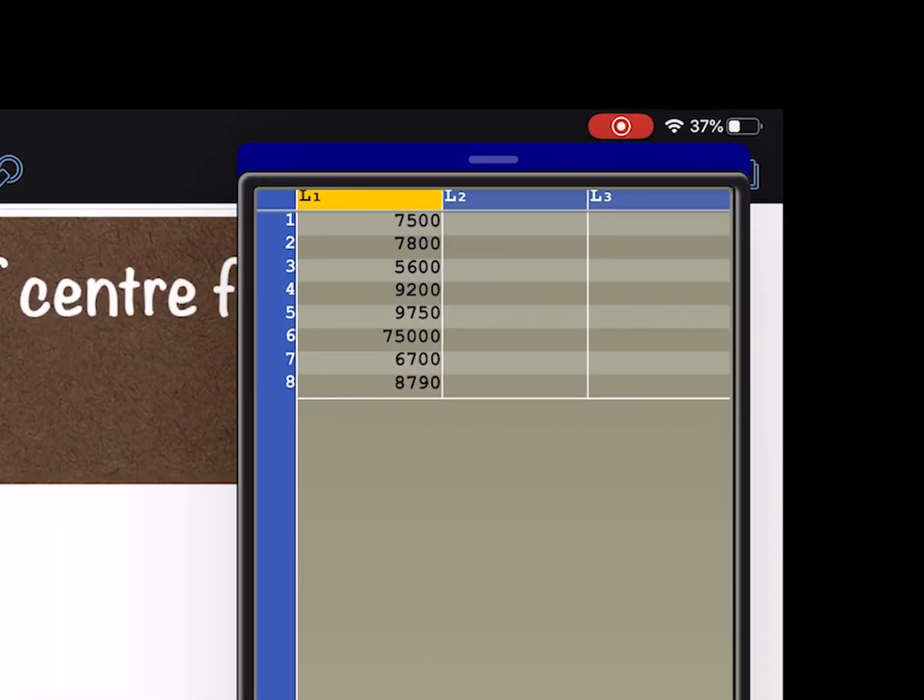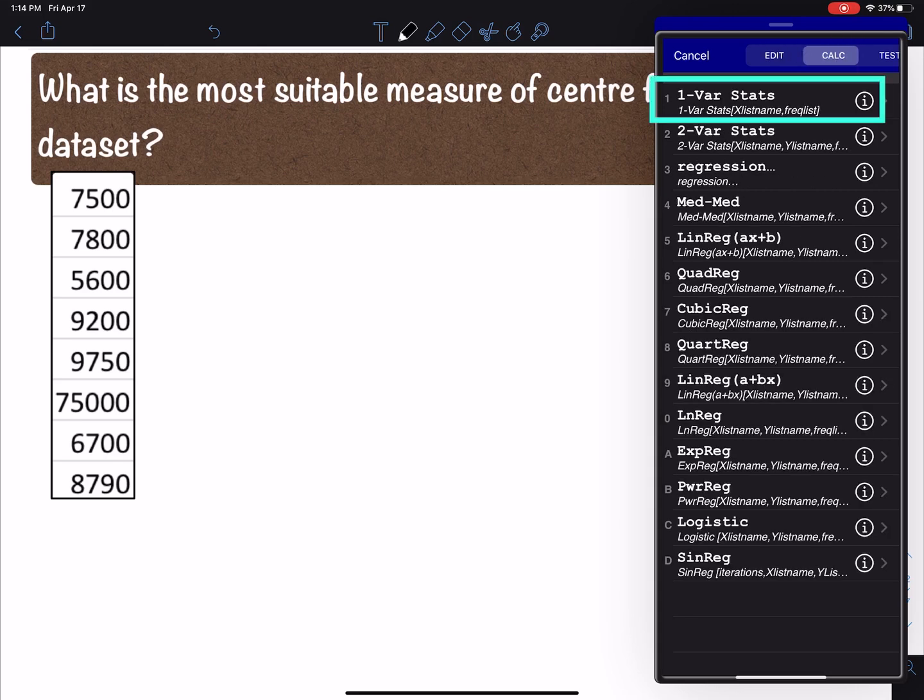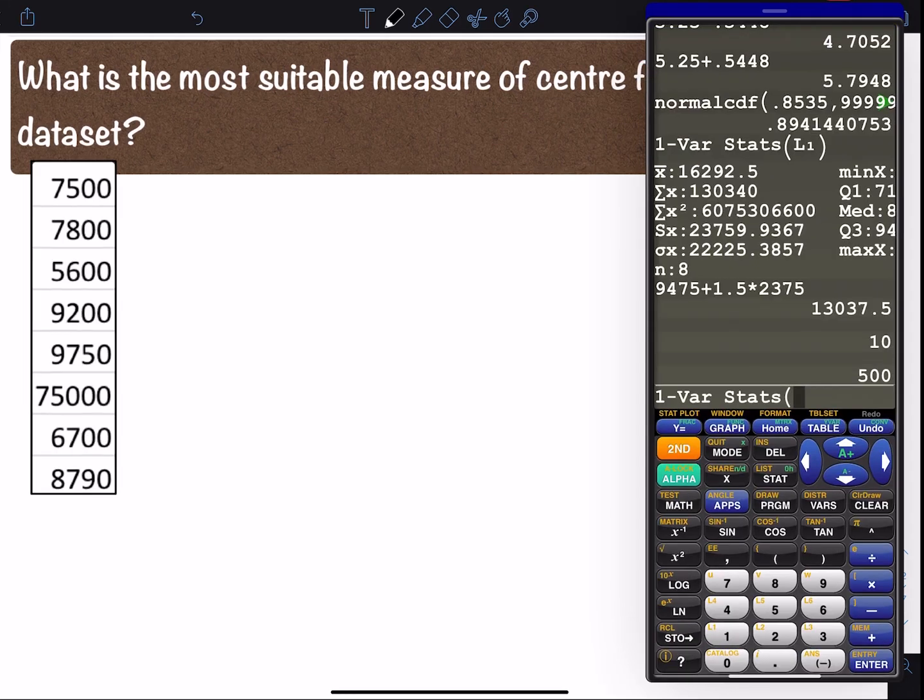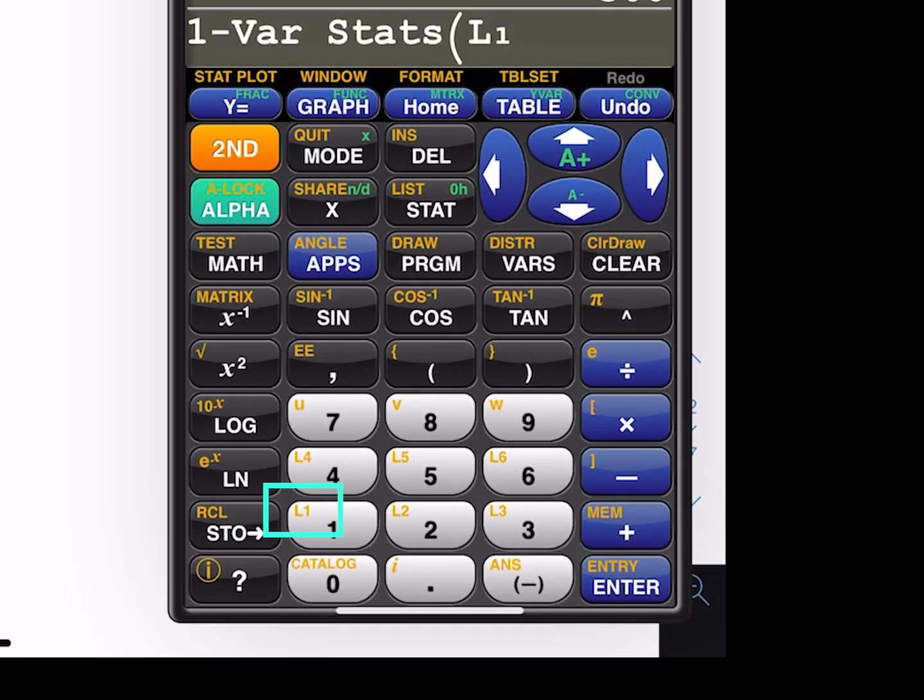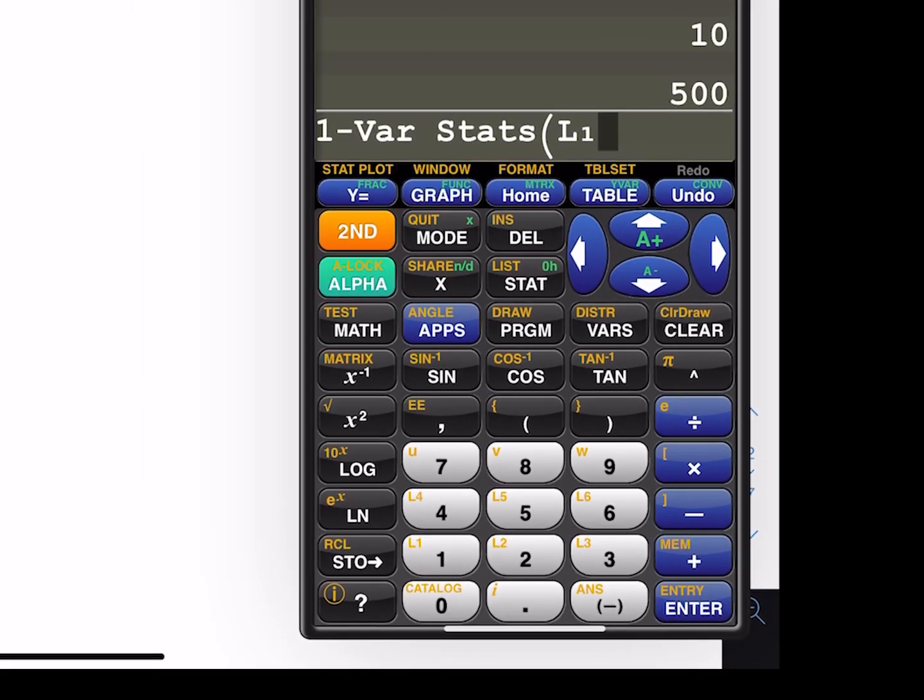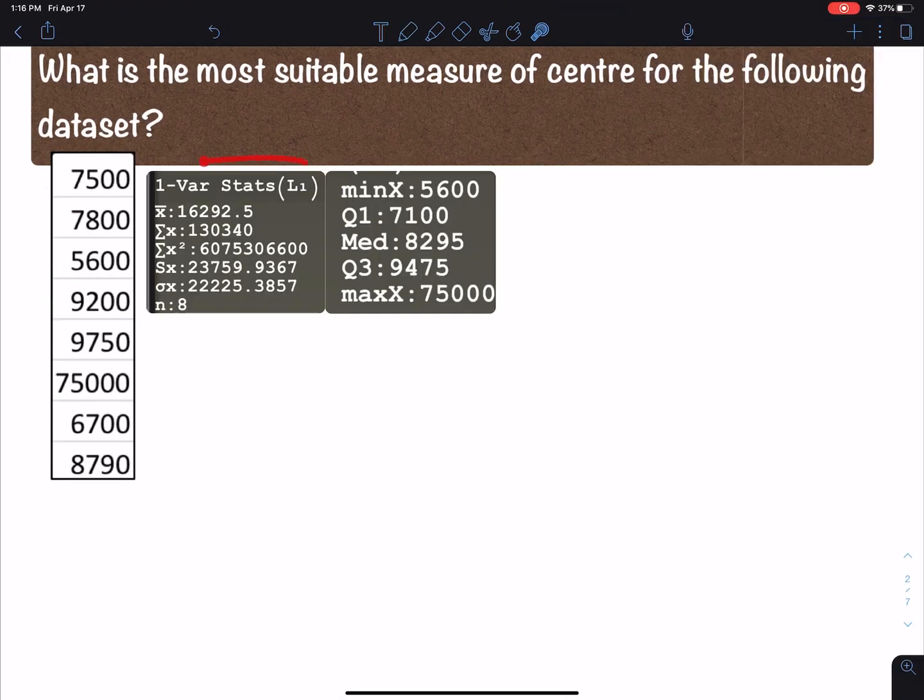Then I'm going to go to stat, calc, one-var stats and I'm just going to put L1 in there. So second one, that gives me the L1. You see the L1 right there. Now if I press enter it's going to give me these summary statistics. So this is what the calculator gives us when we do one-var stats of L1.